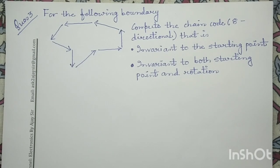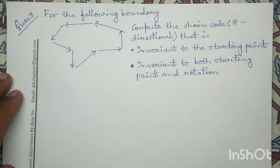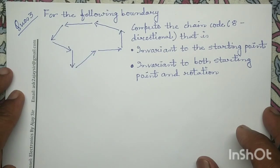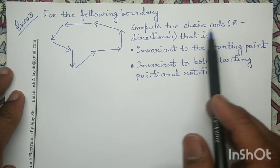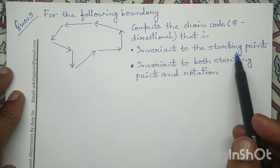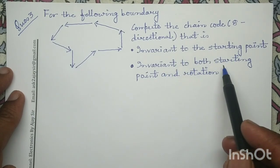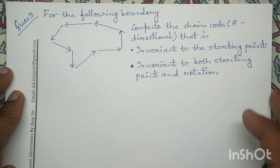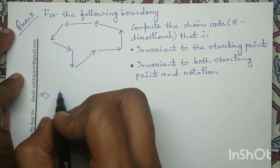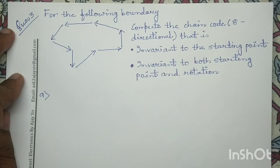Good morning. Today we will discuss one more question on chain code. In this question, the boundary of an image is given to us, and we have to compute a directional chain code which is invariant to the starting point, and which is invariant to both the starting point and the rotation. So let us solve this question. First, we will determine the eight-directional chain code which is invariant to the starting point.